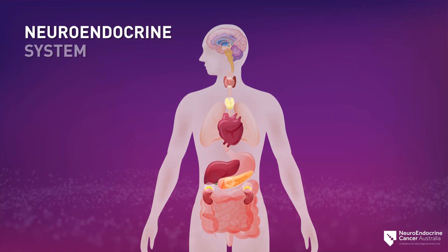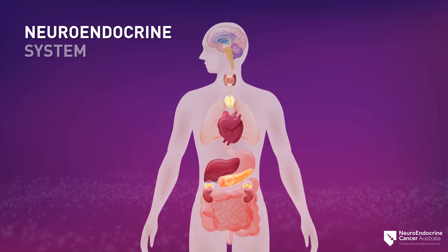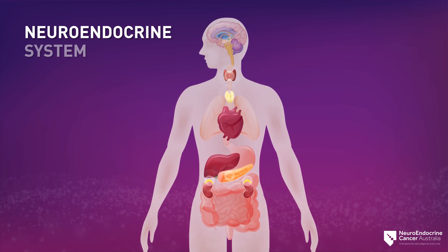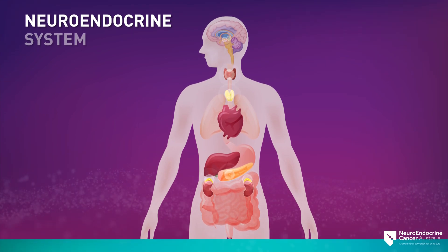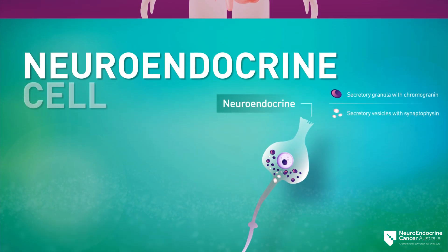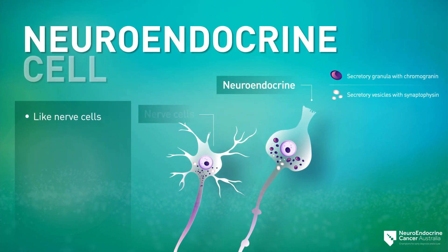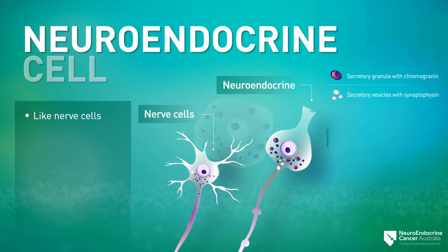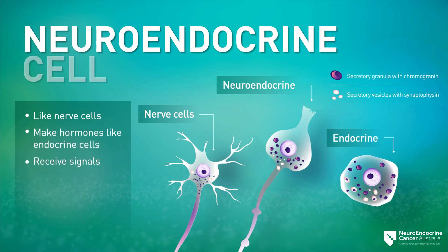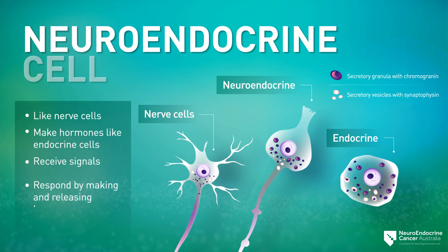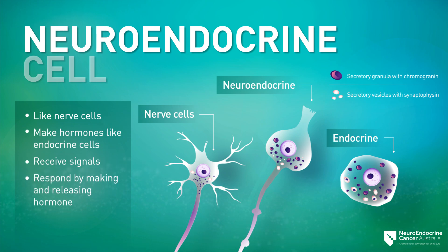The neuroendocrine system is made up of special cells called neuroendocrine cells. They are spread throughout the body. Neuroendocrine cells are like nerve cells, but they also make hormones like cells of the endocrine system. They receive messages from the nervous system and respond by making and releasing hormones, which control many body functions.